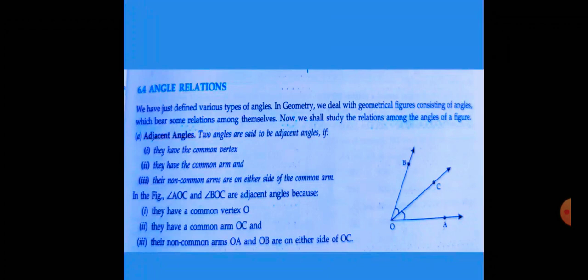Adjacent angles: Two angles are said to be adjacent angles if number 1, they have the common vertex, and number 2, they have the common arm.